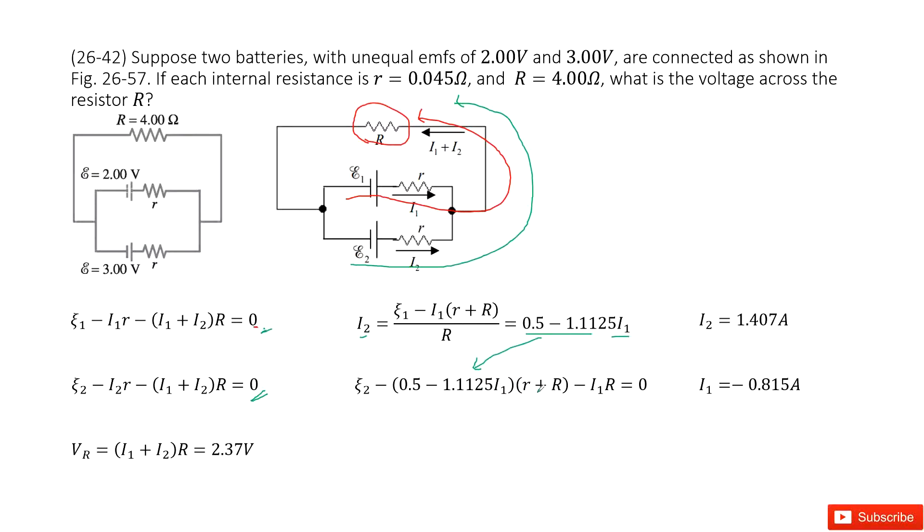And inputting the given quantities, we get I1 equal to this number, and I2 equal to this number. Now you can see, the current I1 plus I2 is found there, and times the resistance R, we get the final answer there. Thank you.